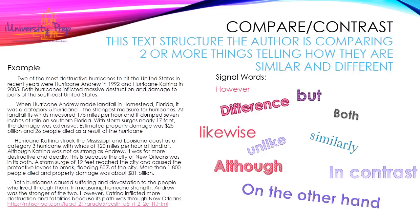Compare and contrast. This text structure is where the author is comparing two or more things, telling how they are similar and how they are different. Your signal words are: however, difference, but, both, similarly, unlike, likewise, although, in contrast, on the other hand. What you're looking for here is the author mentioning at least two different things. Within the paragraphs, you're going to typically have a paragraph that tells how they're similar and then one or two paragraphs explaining their differences. So let's look at this example and see how this is a compare and contrast structure.